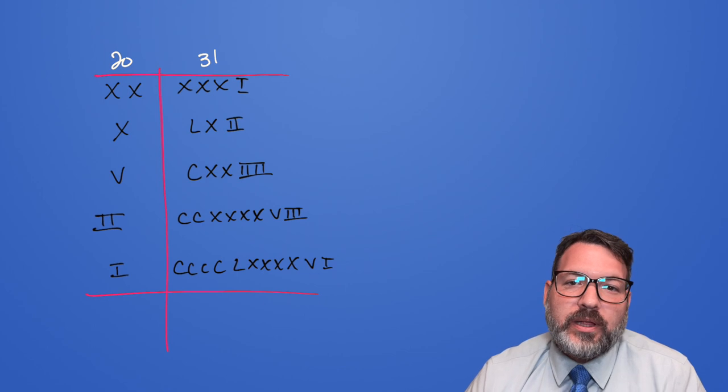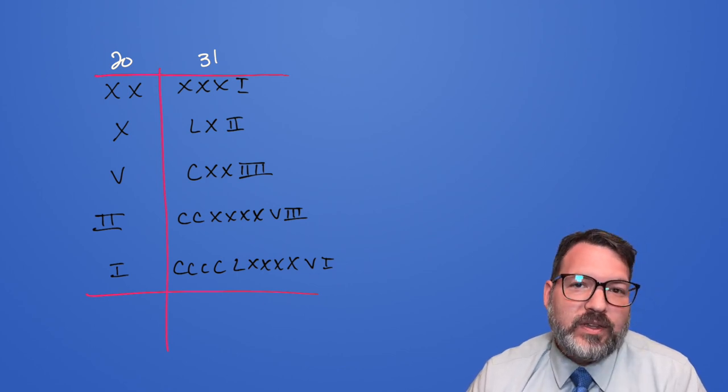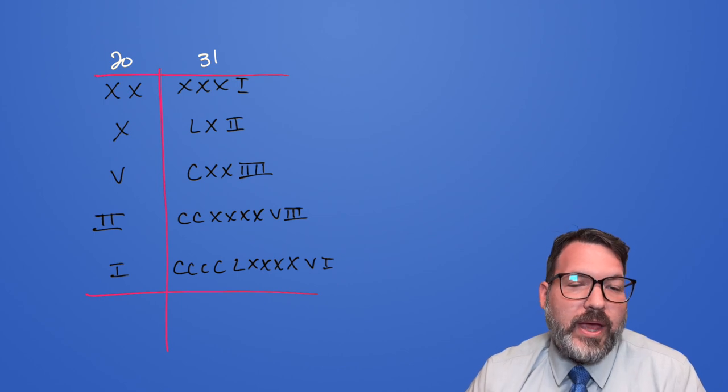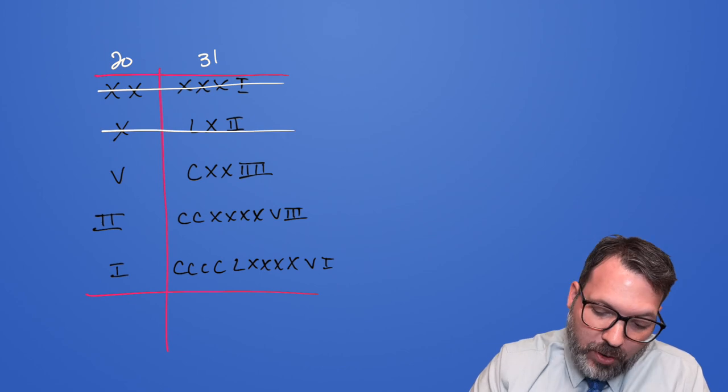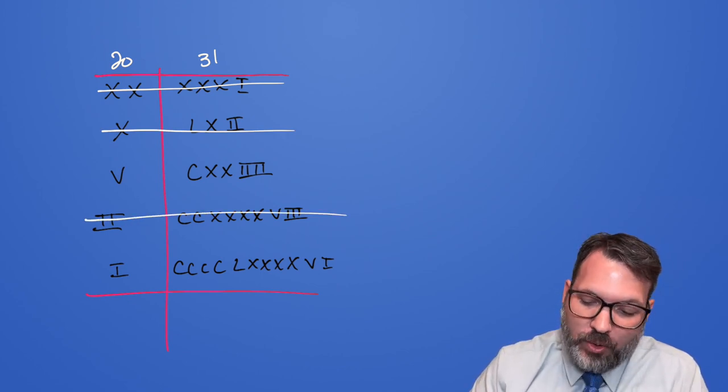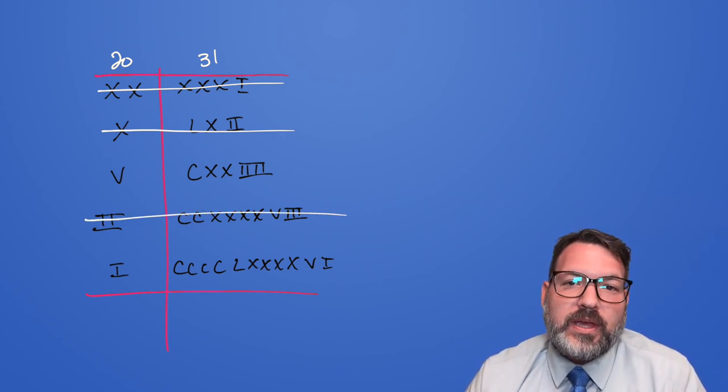Now here's where the algorithm is especially clever. As we look at that left side of the table, every time the left side of the table is an even number, we actually ignore that row entirely. So the XX row, we don't need. The X row, we don't need. The II row, we don't need. The only ones we keep are the odd rows.